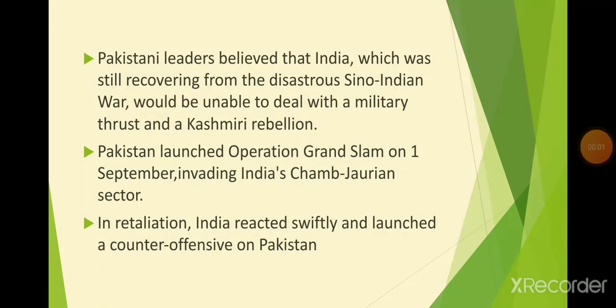After the failure of that operation, Pakistan's forces and their leader Ayub Khan launched a new operation named Operation Grand Slam. This operation was launched in 1965 in the Chhamb-Jaurian sector of India. In retaliation, the Indian forces attacked and responded to Pakistan.